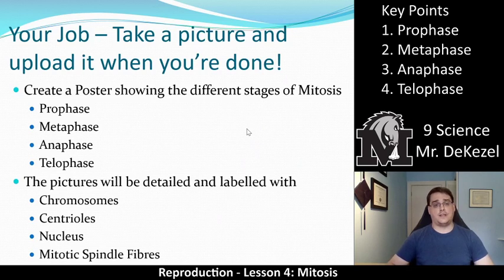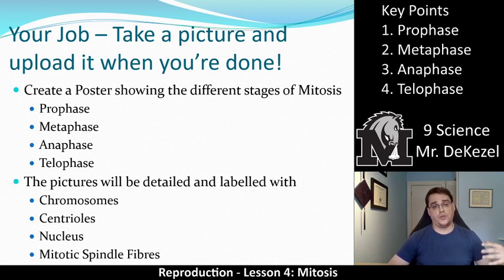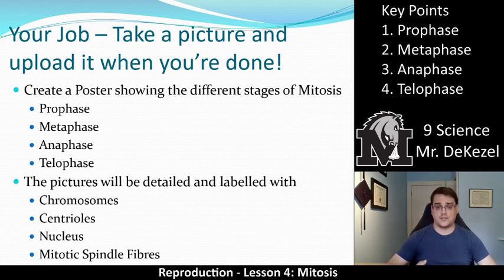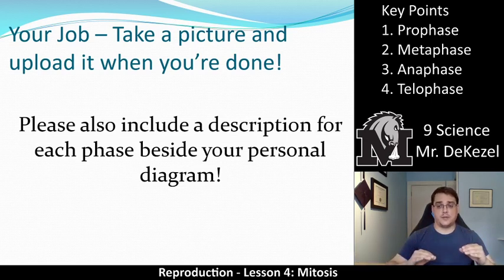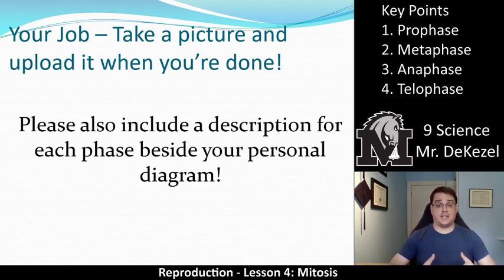What I'd like you to do now is create a poster that shows the different stages of mitosis. There's a blank sheet below, or you can use poster paper and send me a picture when you're done. It needs to include the four phases — prophase, metaphase, anaphase, and telophase — with each part labeled with chromosomes, centrioles, nuclei, and mitotic spindle fibers. You'll also need to include a description for each phase beside your diagram. The idea is for you to get familiar with mitosis, the different phases, descriptions, and terms, and organize it in a way that makes sense for you.